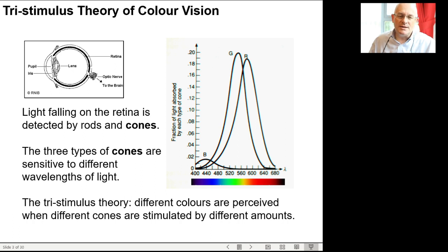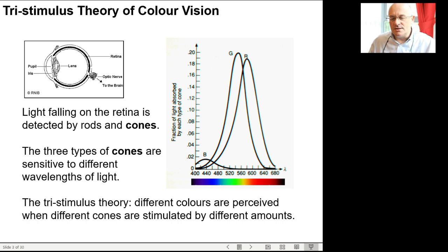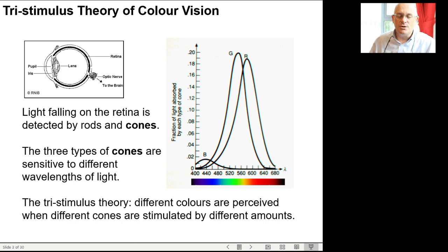Light falling on the retina is detected by rods and cones. There are approximately three different types of cones, and there are several models for how this works. In the tristimulus model, there's a red, green, and blue set of cones which primarily detect different wavelengths of light. The red and green cones overlap quite substantially in their sensitivity. The blue cones are not very sensitive, and that lack of sensitivity is one reason why it was very hard to produce blue LED lights — you have to put a lot more power through a blue LED to get the same sensation of brightness as a red or green one.